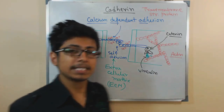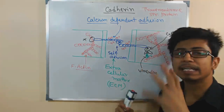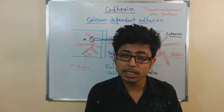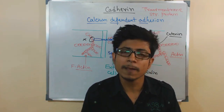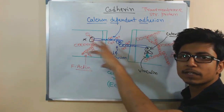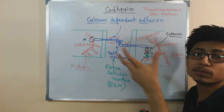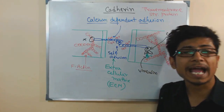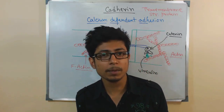Cadherins are important during cell division because the cell must manage its size and sense whether it needs to grow more or less. If neighboring cells are in very close proximity, the cell should not grow excessively. The presence of cadherins in the extracellular matrix helps the cell understand how much to grow — this is contact inhibition. Cadherin is a very important protein for this signaling process.